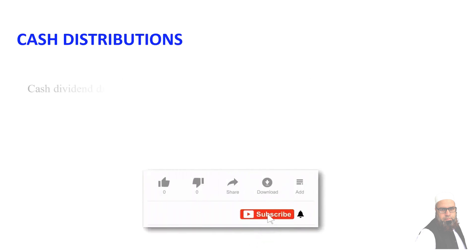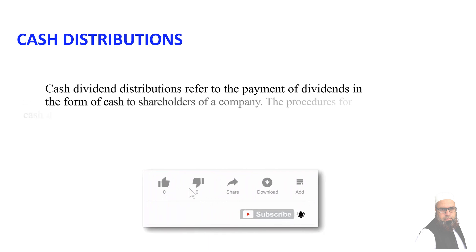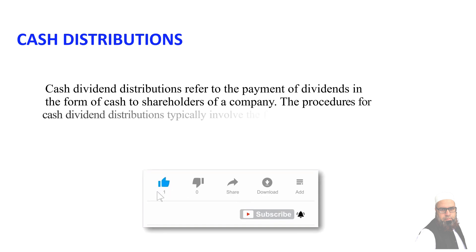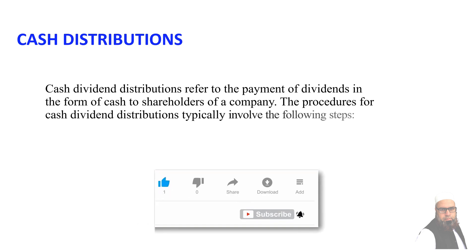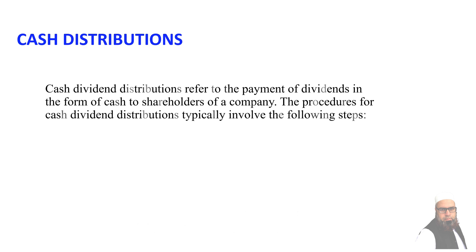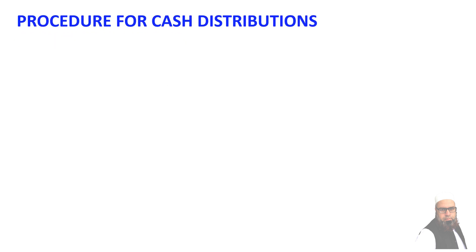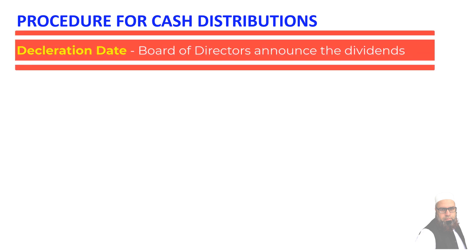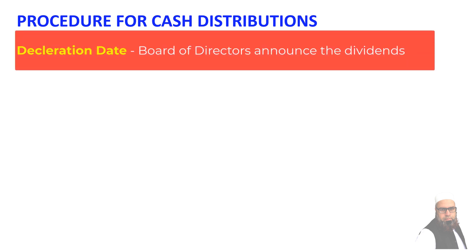Cash distributions refer to the payments made by a company to its shareholders or owners in the form of cash. These distributions are typically made from the company's profits or accumulated earnings, and are considered a way to return value to shareholders. The procedure for cash dividend distributions typically involves the following steps. The first is the declaration of dividends: the company's board of directors declares the dividend, specifying the amount to be distributed per share.